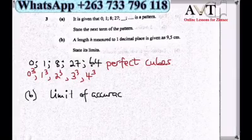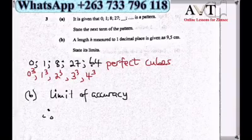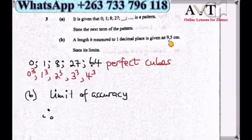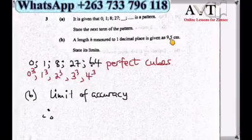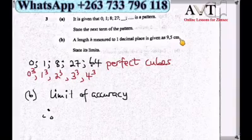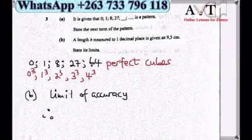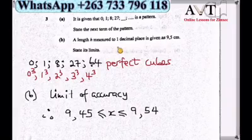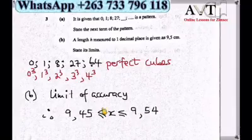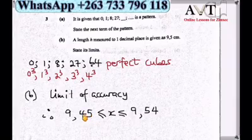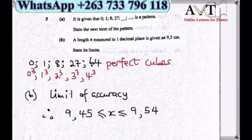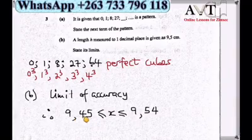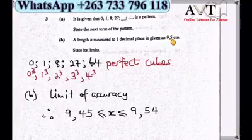Question 3b: A length measured to one decimal place is given as 9.5 cm. State its limits of accuracy. We find the minimum and maximum values that round to 9.5. The lower limit is 9.45 and the upper limit is 9.54, so the limits are 9.45 ≤ x < 9.55. Any number in this range can be rounded to 9.5.